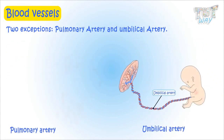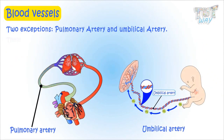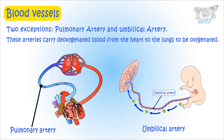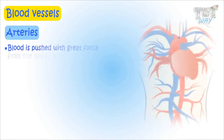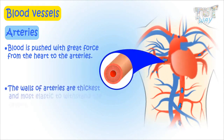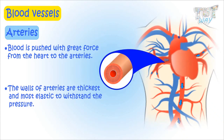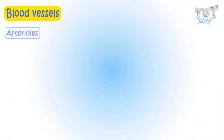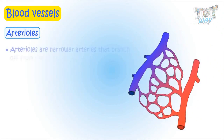The only two exceptions are pulmonary and umbilical arteries — these arteries do not contain oxygenated blood. Instead, they carry deoxygenated blood from the heart to the lungs to be oxygenated. Blood is pushed with great force from the heart to the arteries, so the walls of the arteries are required to be thicker and more elastic to withstand the pressure. Artery walls are the thickest and most elastic amongst all types of blood vessels.